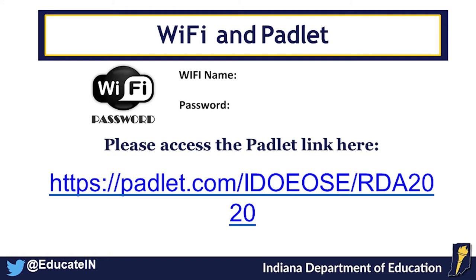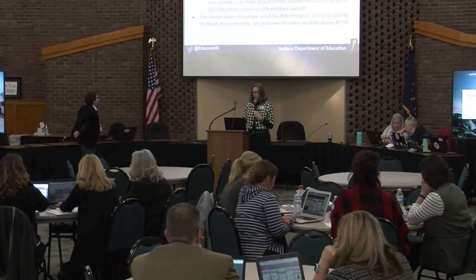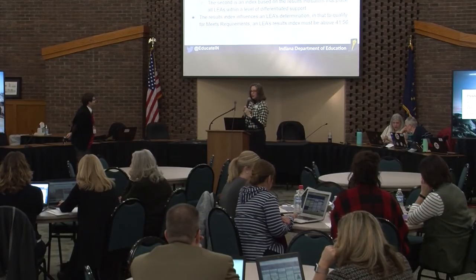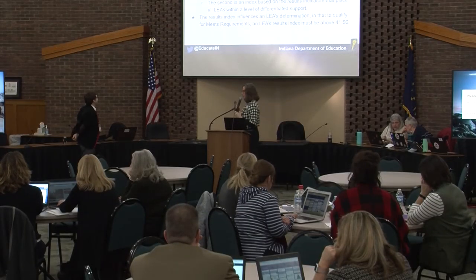There were four changes this year: how the system calculations are done, LRE, enrollment grouping, and alternate assessment. A document online on the Padlet walks through each of these four changes in detail.